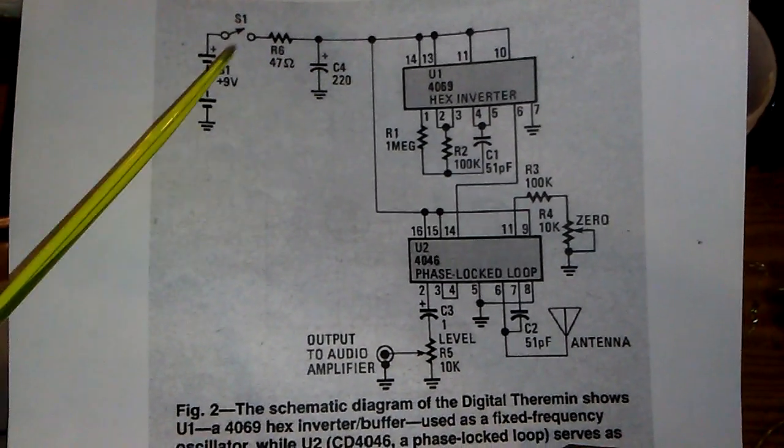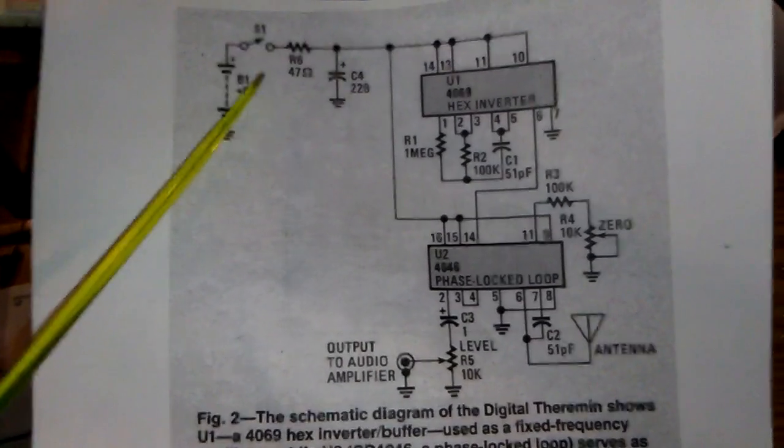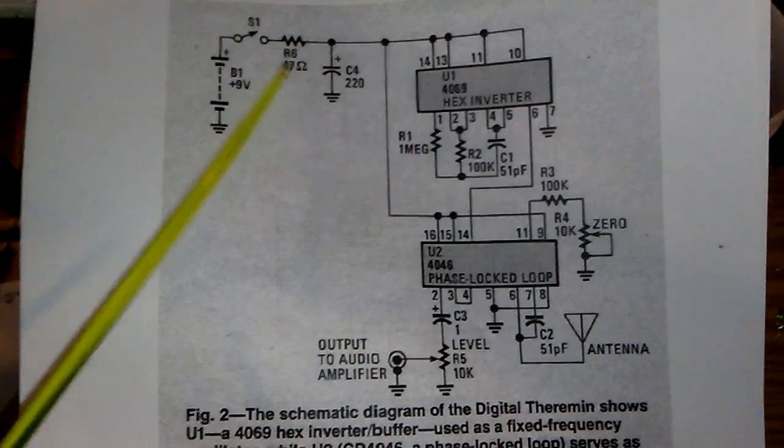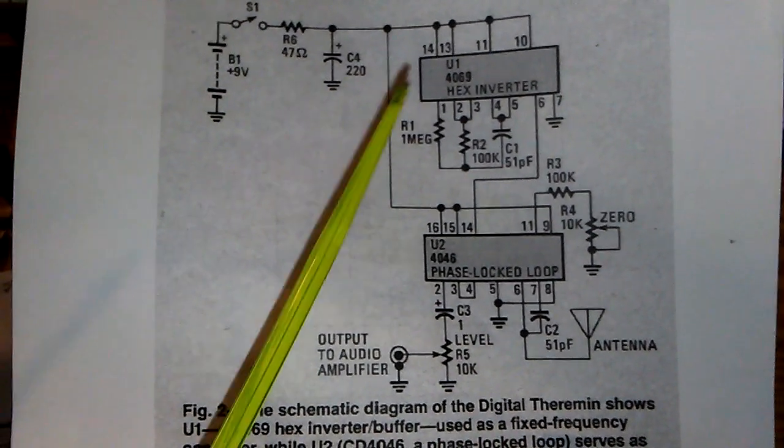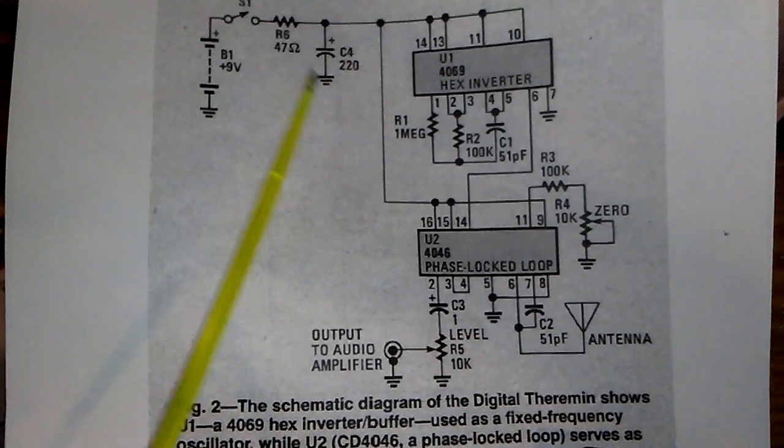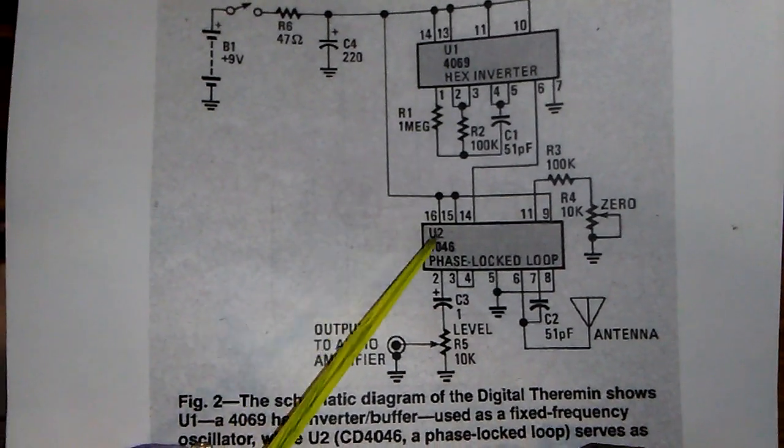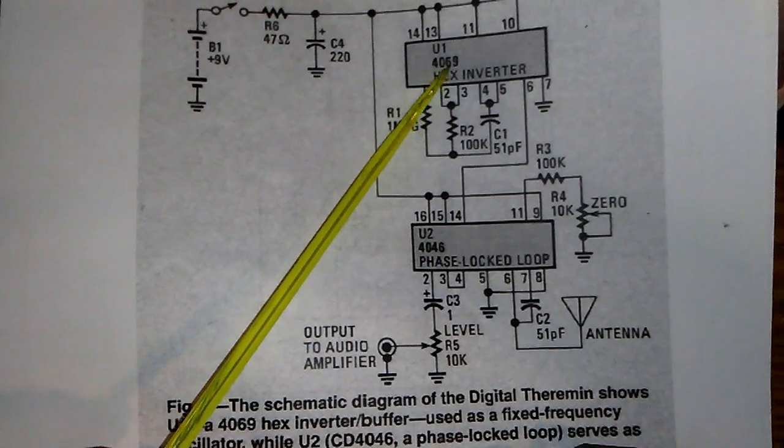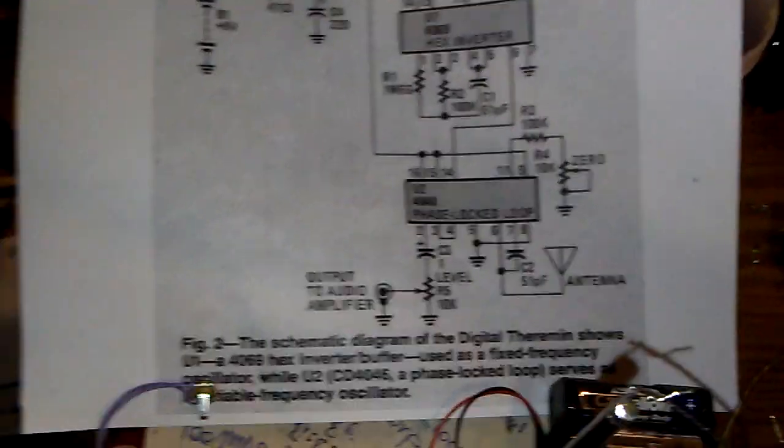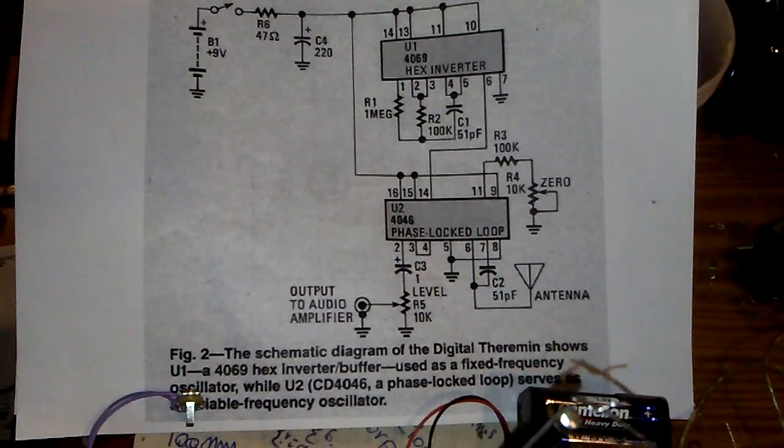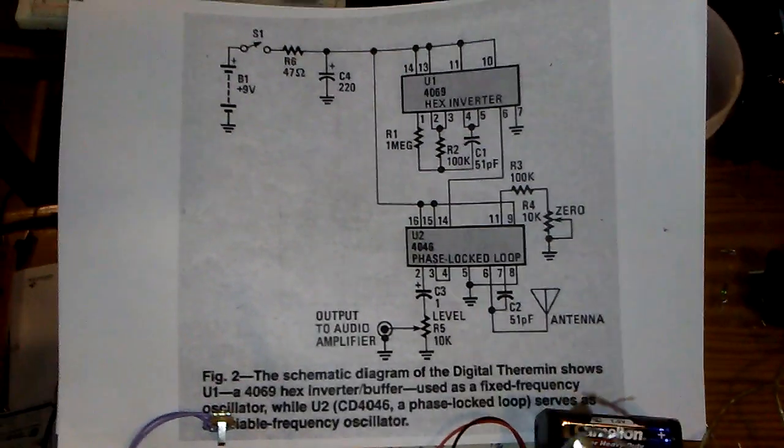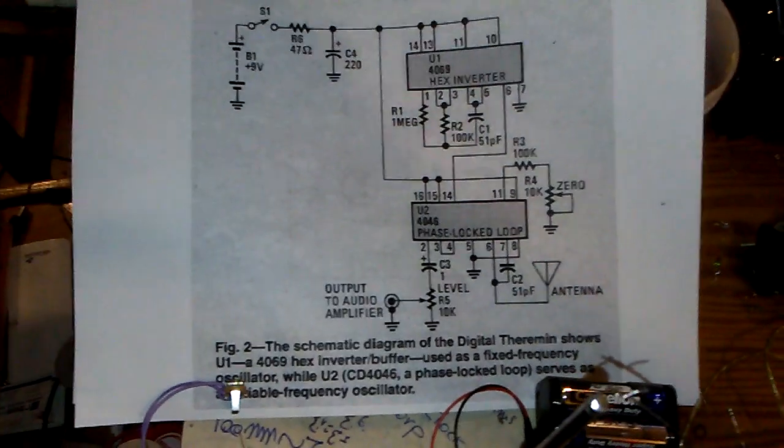Don't forget to use a 9 volt battery and 47 ohm resistor to regulate the voltage for the sensitive 4069 oscillation part. And it is very important to use a fresh battery. Thanks for watching.